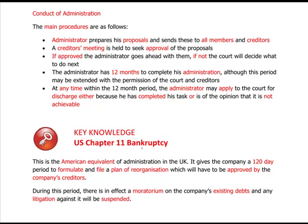Under Chapter 11, companies get a 120-day period to formulate and file a plan of reorganization, which must be approved by the company's creditors. During this period there is effectively a moratorium on the company's existing debts and any litigation is suspended — just the same as the UK administration process. That's the end of chapter nine; see you in chapter ten.